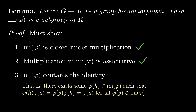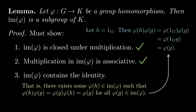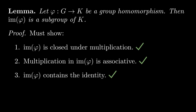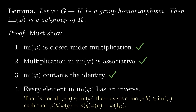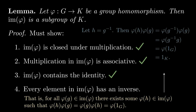Third, we must show that Im(phi) has an identity element — that is, there is some element phi(h) for which multiplying by it does nothing. We set h equal to the identity element in g, which we'll call 1_g. Then, by applying the defining property of group homomorphisms, we see that phi(1_g) does indeed do nothing when you multiply by it. Finally, we must show that Im(phi) is closed under inversion: for each element phi(g), there exists some element phi(h) such that multiplying the two yields the identity. We set h equal to the inverse of g, causing their product to equal phi(1_g), which is the identity in Im(phi).